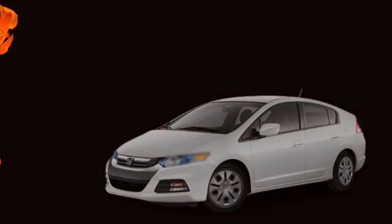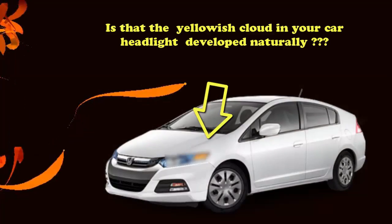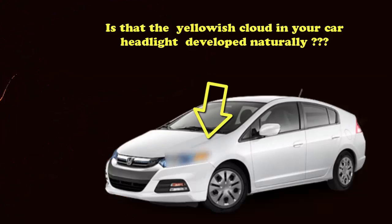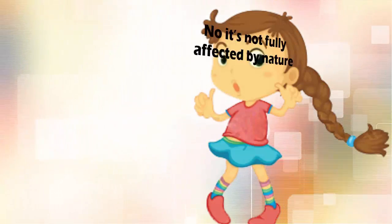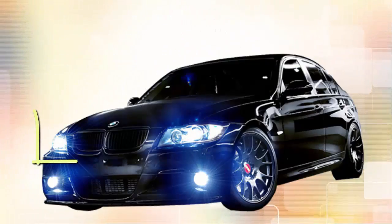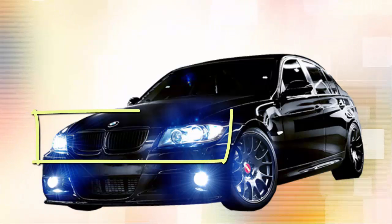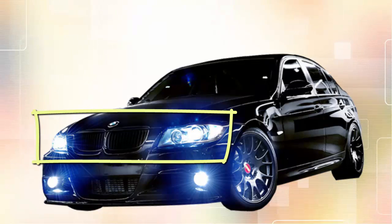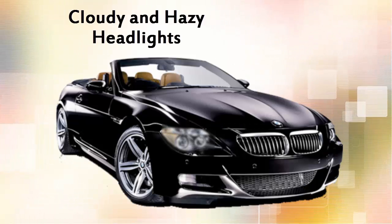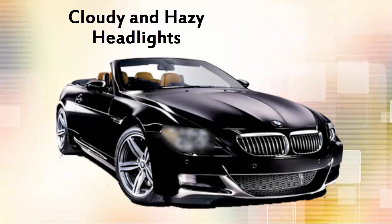Headlights operate ordinarily without much problem, but they can turn yellow and foggy if you won't notice the change. Do you think the yellowish cloud in your car headlights has been developed naturally? No, it's not fully affected by nature. Actually, modern vehicles are equipped with plastic or polycarbonate headlight lenses, which become oxidized over time and look cloudy and hazy.